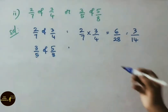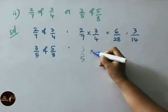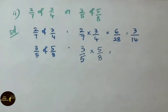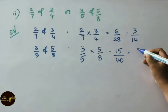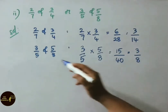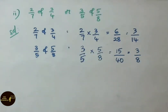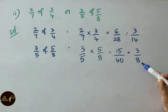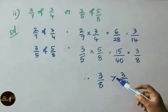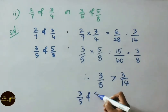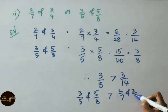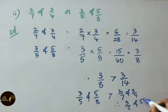For the second part, 3 by 5 of 5 by 8: write 3 by 5 into 5 by 8. Multiplying: 3 into 5 is 15, 5 into 8 is 40. In the 5 times table, 5 threes are 15 and 40 is 5 eights. So 3 by 5 of 5 by 8 equals 3 by 8. Among these two fractions, 3 by 8 is greater than 3 by 14, because both numerators are the same and the lowest denominator gives the greater fraction. Therefore, 3 by 5 of 5 by 8 is greater.